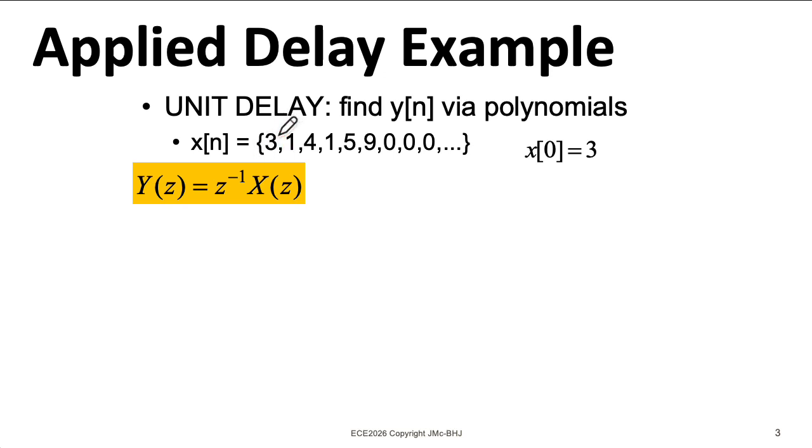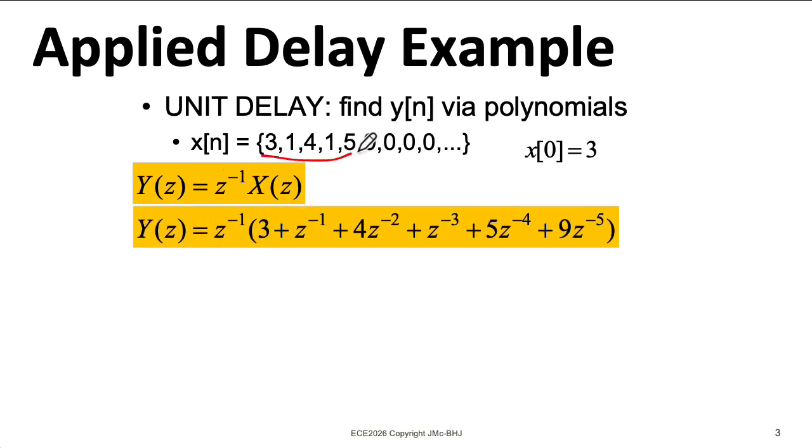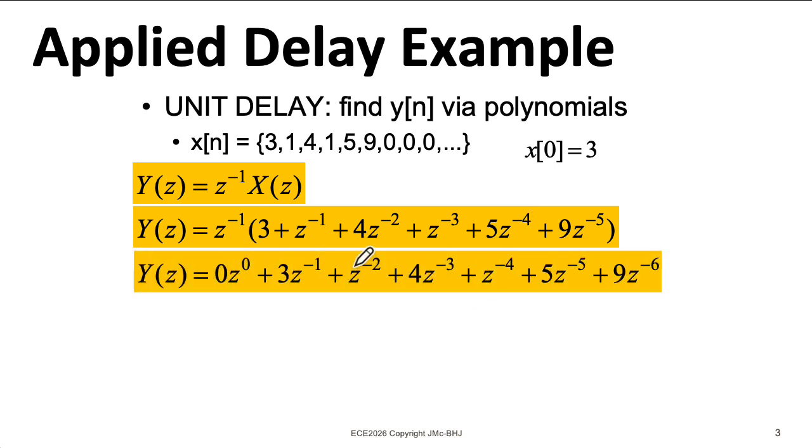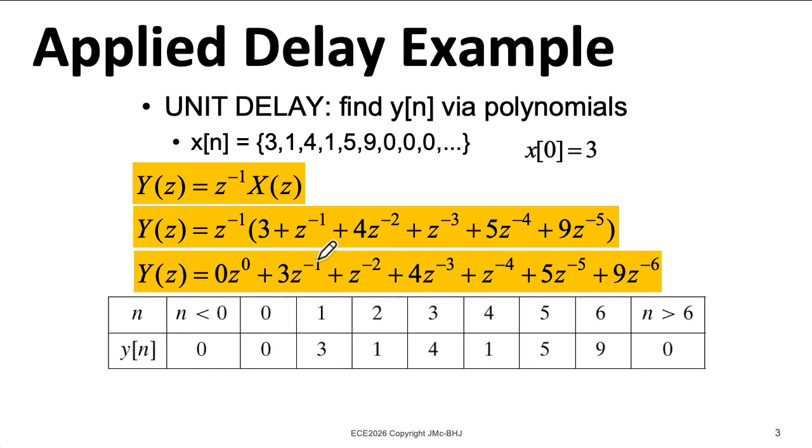Now, suppose that I were to pass this through a delay system. At the end of the last lecture, we saw that a delay system has a system function of Z to the minus 1. So I can take the Z-transform of the sequence, plug it in here, and when I multiply through this Z to the minus 1, all of the Zs lower in power by 1. So I wind up with this. And when I convert it back into the time domain, I see that everything shifted over by 1. The 3 now goes with this Z to the minus 1. So the 3 shows up in the N equals 1 spot. And this is a general property. If you want to delay a signal by 1 time unit, you multiply it by Z to the minus 1 in the Z-transform domain.